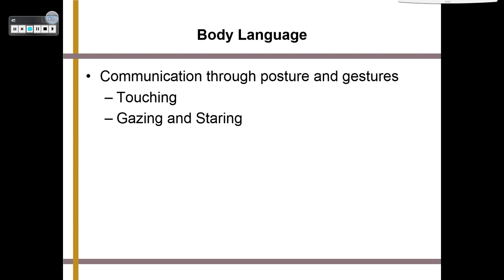When talking about others, we need to talk about body language — communicating through posture and gestures. You might touch someone to express interest or gaze into their eyes. By watching complete strangers' body language, you can often figure out if they're going to have a great night talking to someone at a bar or if they're going to be left alone — based purely on the body language between the people involved.